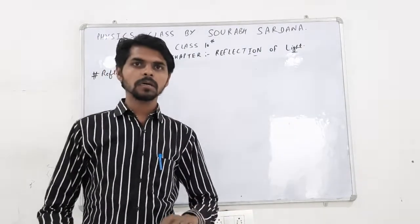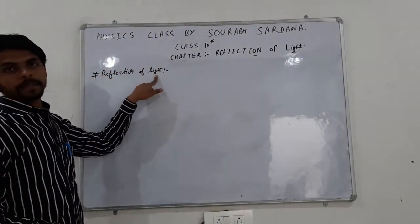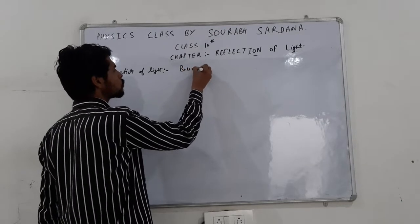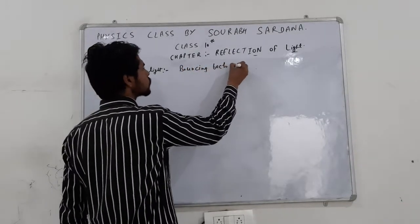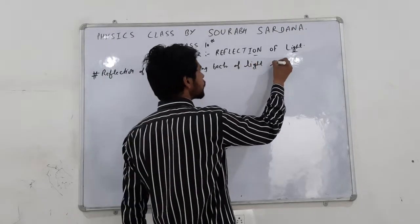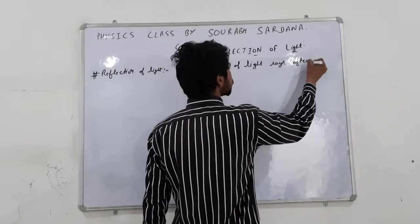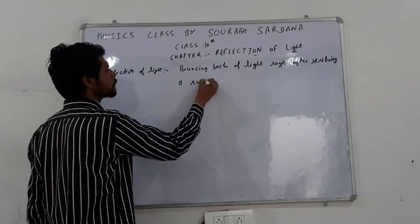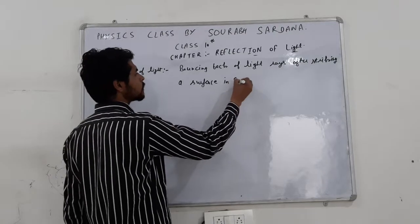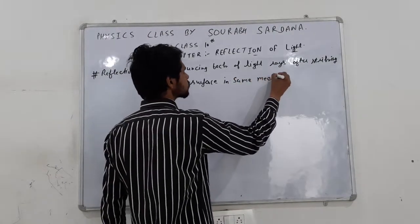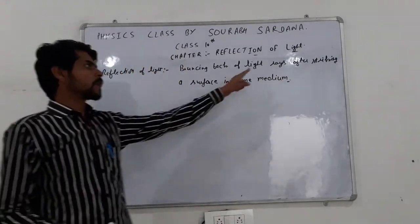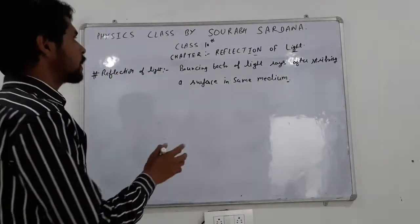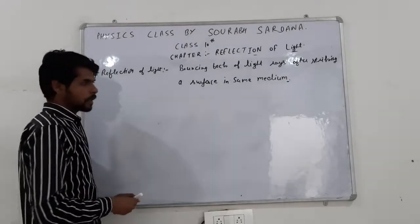Reflection of light is the bouncing back of light rays after striking a surface in the same medium. That is what reflection of light means.